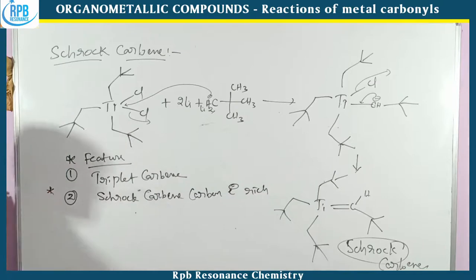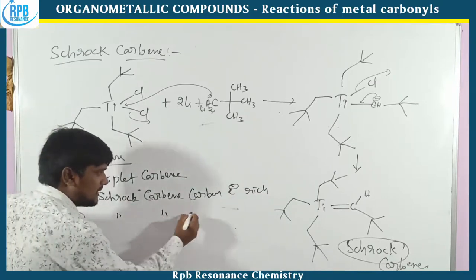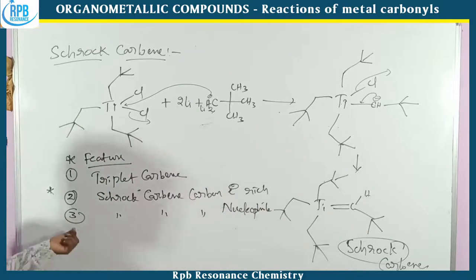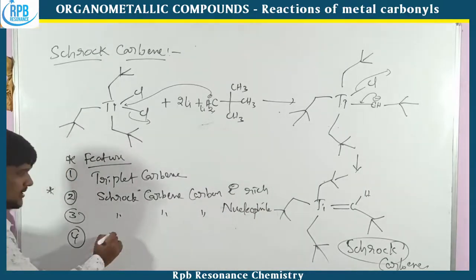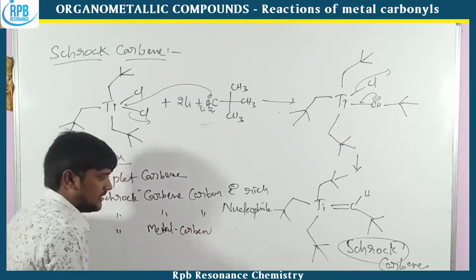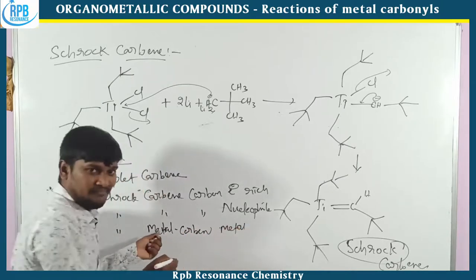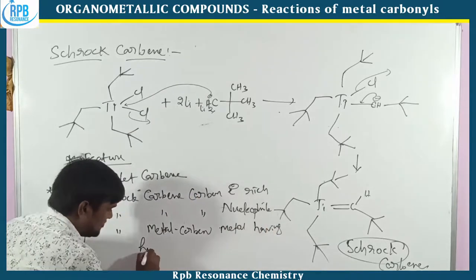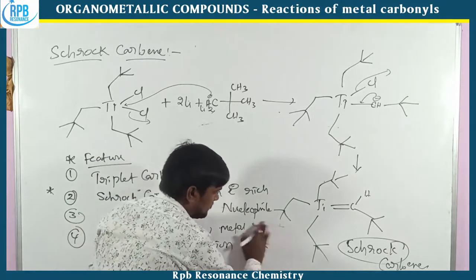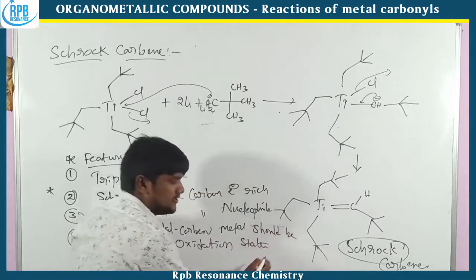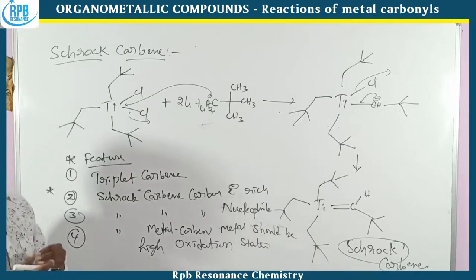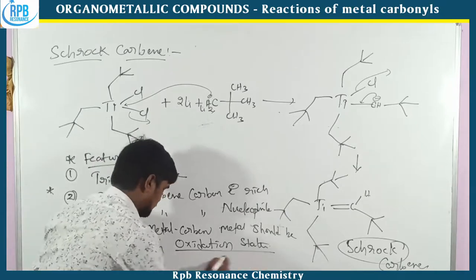Schrock carbene carbon is electronically rich — this is a previous year exam question. Third feature: Schrock carbene carbon acts as a nucleophile. In previous cases, Fischer carbene carbon acts as an electrophile, but Schrock carbene acts as nucleophile. Fourth: in Schrock metal carbene, the metal is in a high oxidation state. In Fischer carbene the oxidation state of the metal is low, but in Schrock carbene it is very high.